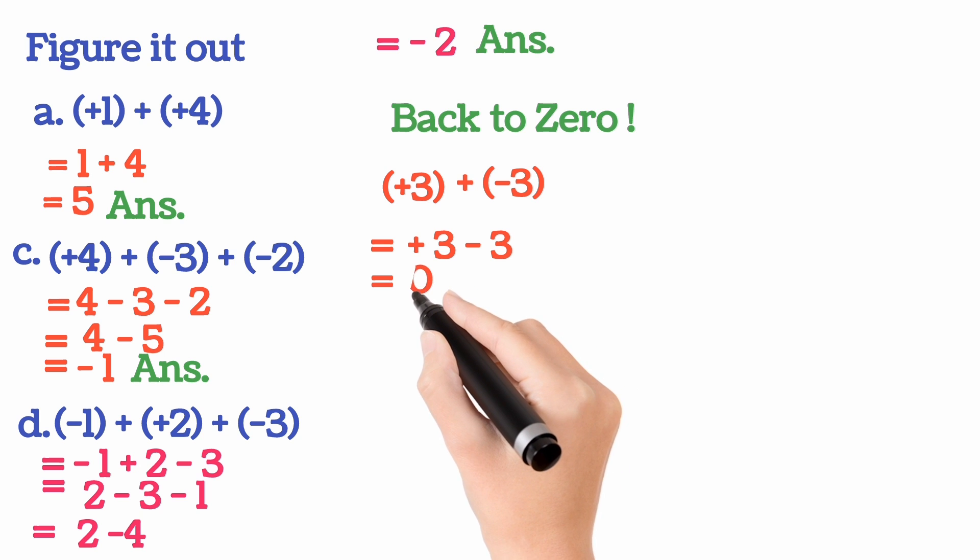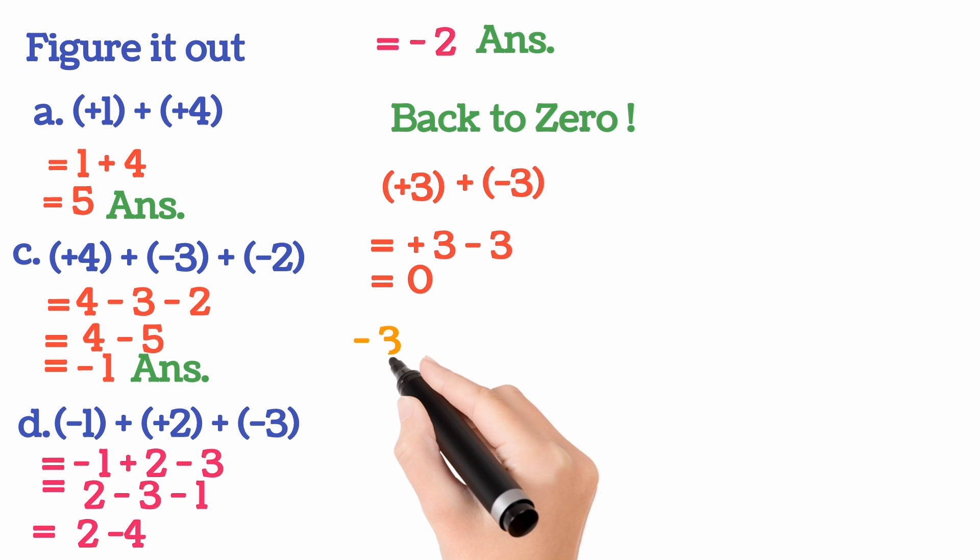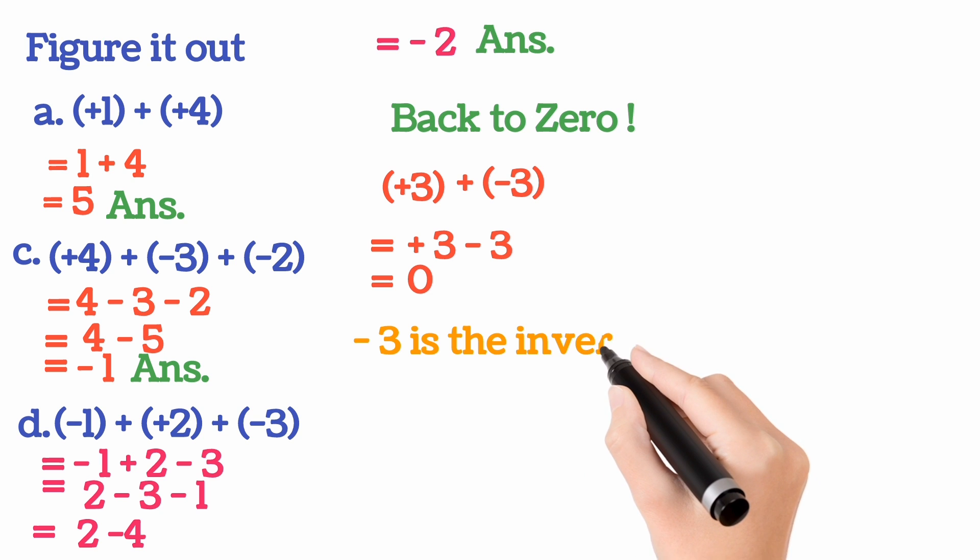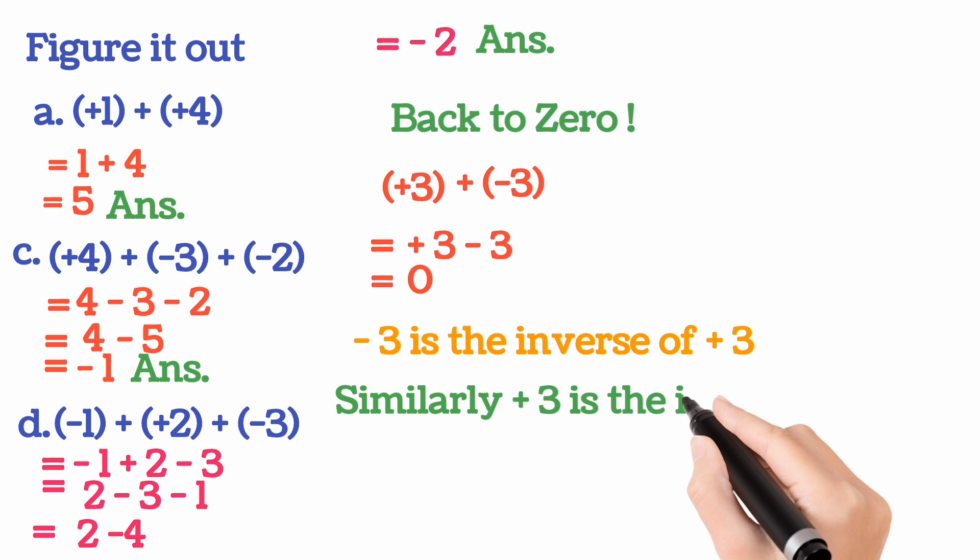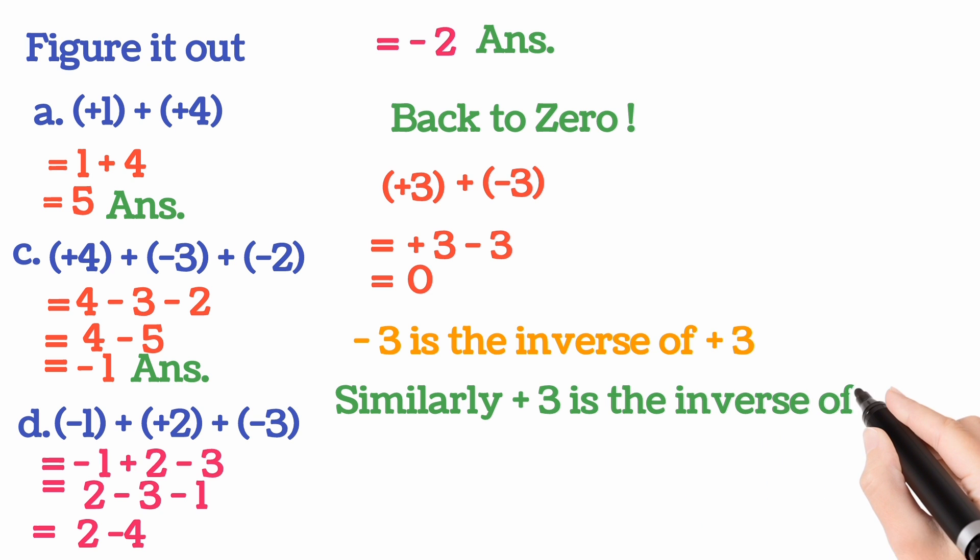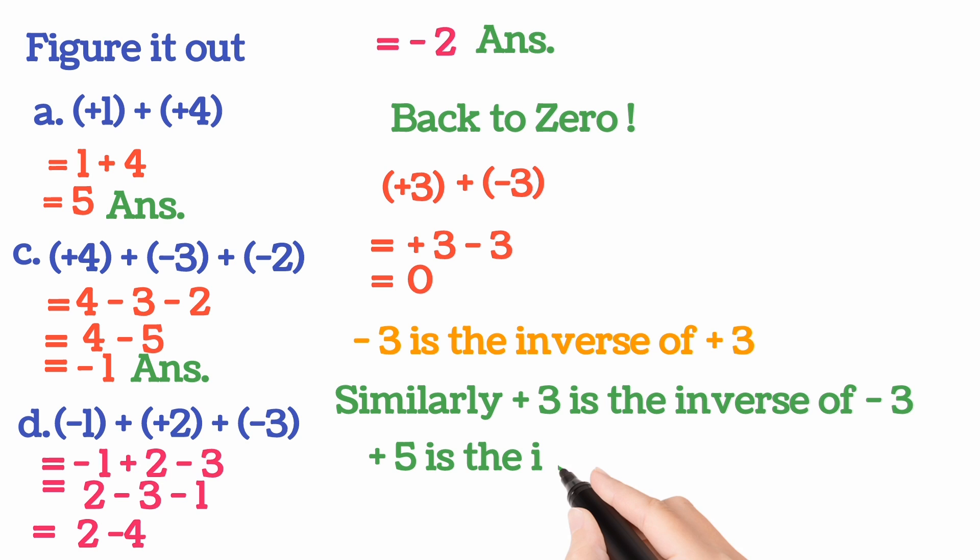And other way we can see, we can say minus 3 is the inverse of plus 3. And similarly, plus 3 is the inverse of minus 3. Means, in short, any integer, whether it is positive or negative, the inverse is same number with opposite sign. Plus 5 is the inverse of what? Minus 5. And minus 7 is the inverse of what? Plus 7. Same number but opposite sign is the inverse. Clear? I hope all of you understood this much.